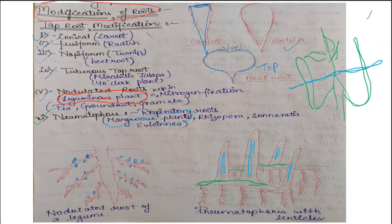Other examples of pneumatophore roots include Rhizophora and Sonneratia — some of the plants where you can find this type of root.